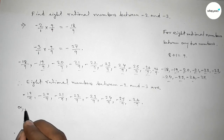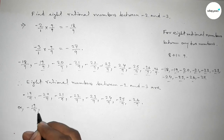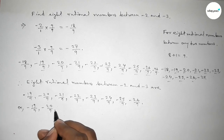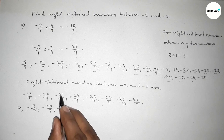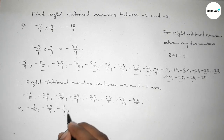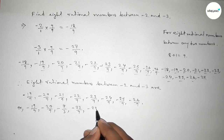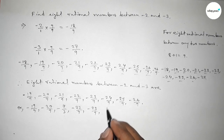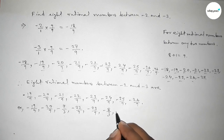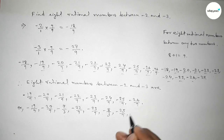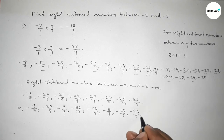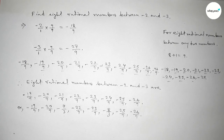We can also simplify some of these: minus 19 over 9 stays as is, minus 20 over 9 stays as is, minus 21 over 9 divided by 3 gives minus 7 over 3, minus 22 over 9, minus 23 over 9, minus 24 over 9 divided by 3 gives minus 8 over 3, and minus 26 over 9. That's all, thanks for watching. If this video is helpful to you, please share it with your friends.